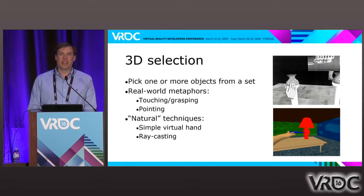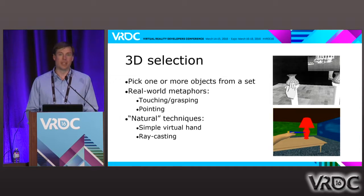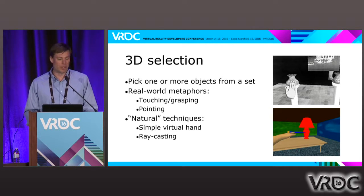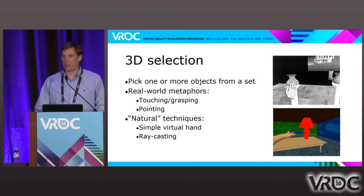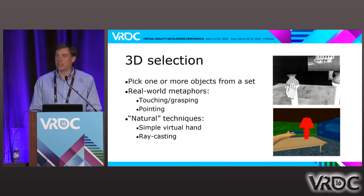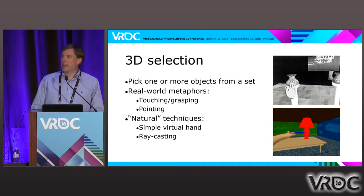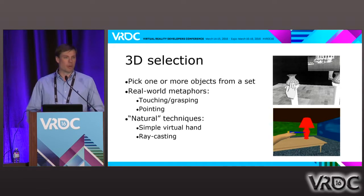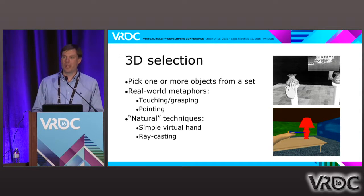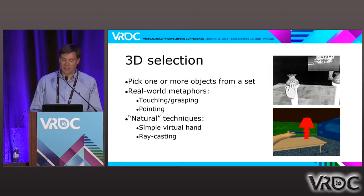The first things you're going to think of in VR is: it's virtual reality, so we should do it the same way we do it in the real world. How do we select things in the real world? We touch them or we point at them. That leads to two so-called natural interaction techniques for 3D selection. One would be the simple virtual hand — I track my hand, put a virtual hand at that location, it touches an object and I can select it. The problem is it only works within arm's reach. If I want to select something farther away, I might use a laser pointer metaphor or ray casting.